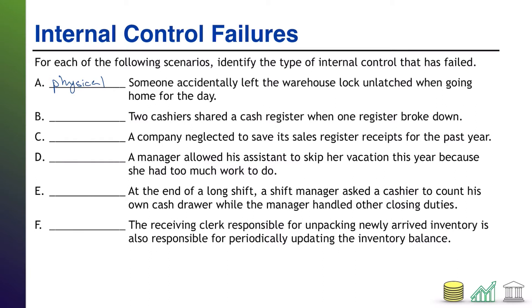All one register broke down. Now, this is a tough one because we have two types of controls that are very similar. But this one right here is a failure in establishment of responsibility. What's happening here is you have a cash register. That cash register should be assigned to a single person who is responsible for the transactions that occur on it and the money within it. The moment you let a second person join in on that register, now neither party can be held fully responsible because they can always point fingers at the other one.